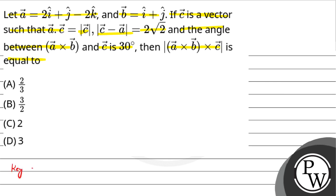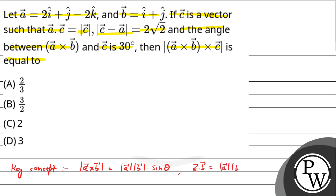Let us discuss the key concept used. The magnitude of the cross product of two vectors equals the magnitude of the first vector times the magnitude of the second vector times the sine of the angle between them. Also, the dot product concept will be used: the dot product of two vectors equals the magnitude of vector a times the magnitude of vector b times the cosine of the angle between them.